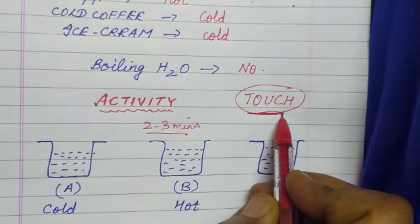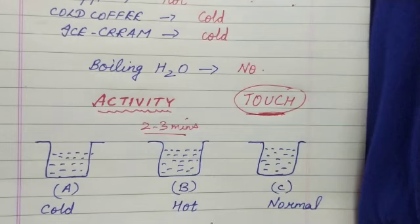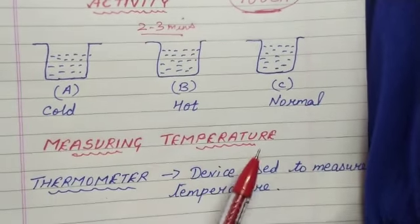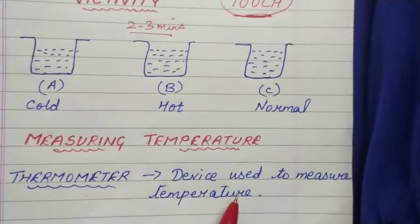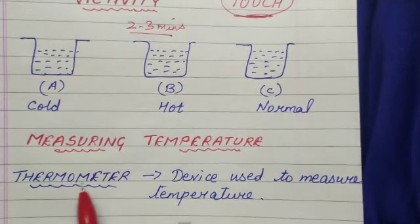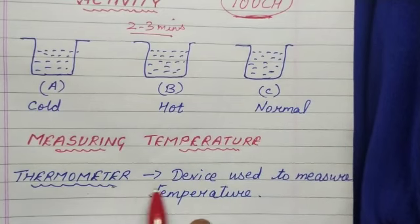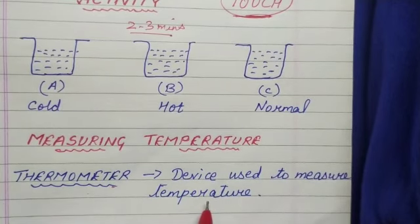Now, since we cannot touch and say whether a substance is hot or cold, so what do we do now? How to measure temperature? Now we will see how to measure temperature. So we can measure temperature using a device which is called as thermometer. What is thermometer? It is a device used to measure temperature.